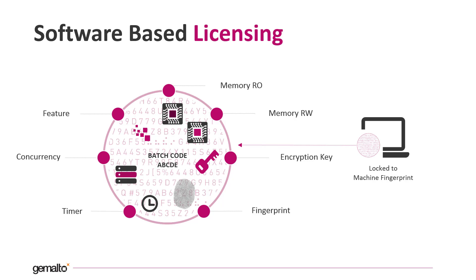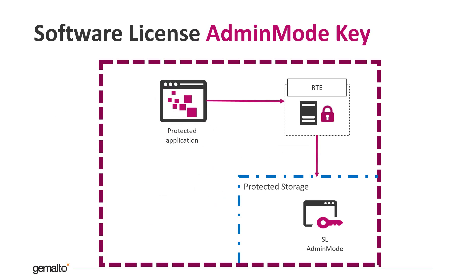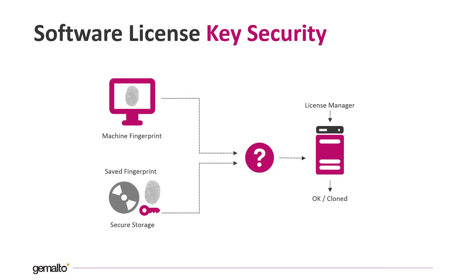I'm going to talk more in depth about the protection strategies in a future video. The SL admin mode license is stored on the disk but it is not stored in the file system, so if you open the file explorer you cannot access this license at all. The license is stored in a special area of the hard drive. For this reason, this kind of key requires the installation of the runtime environment. The runtime environment comes with a device driver able to access the special area called the protected storage and communicate with the SL admin mode key. When a protected application runs and seeks a valid license, the Sentinel LDK library calculates the fingerprint of the machine and compares it with the one stored in the license.